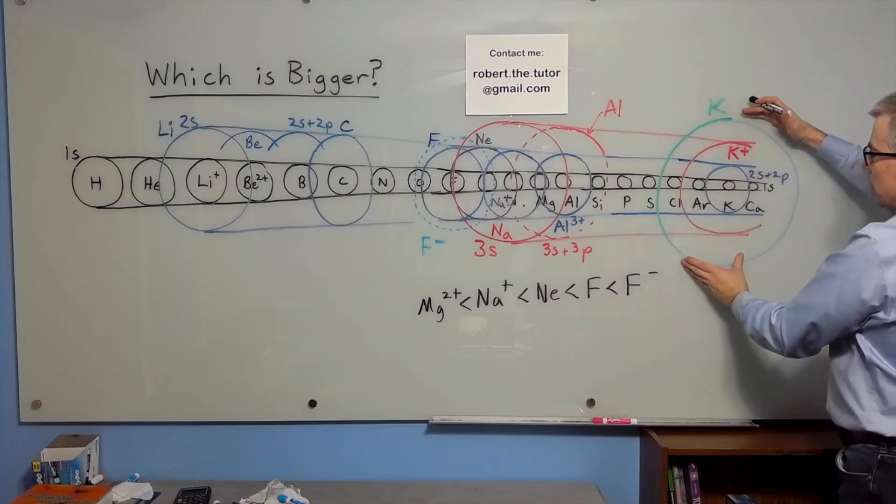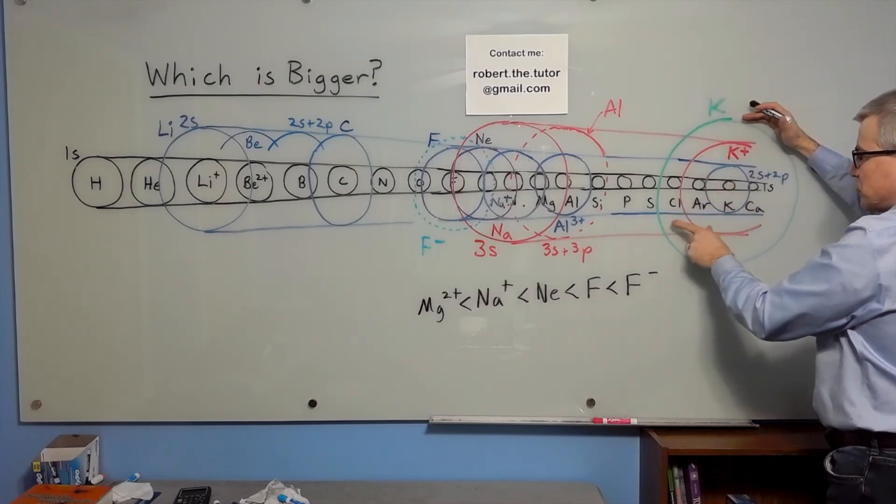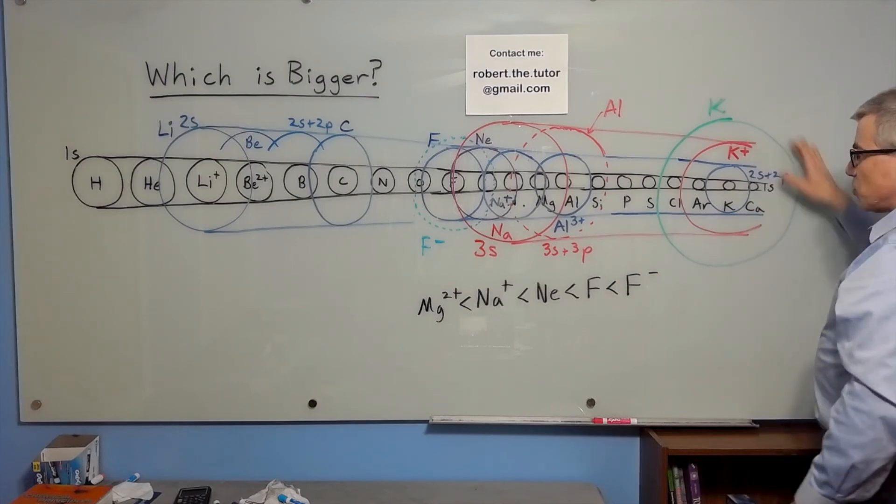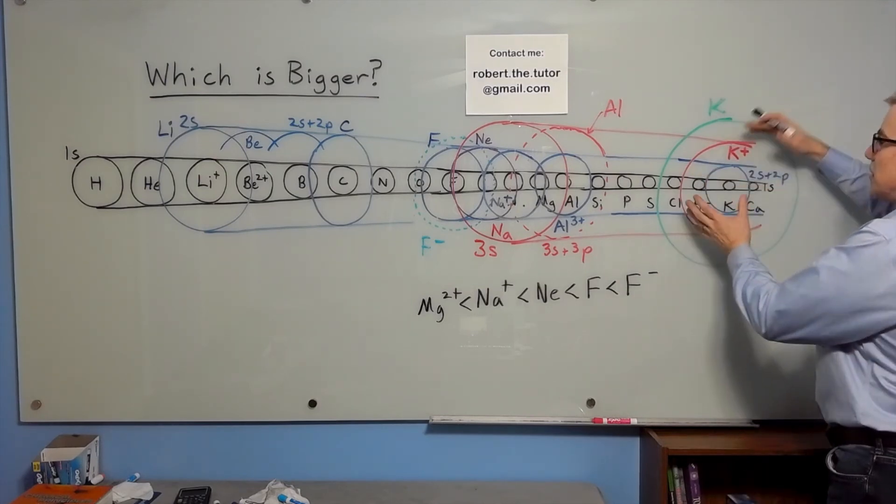You are adding on 1s, 2s, 3s, 4s. You're adding the 4s orbital, a whole new shell. The atom gets a whole lot bigger.